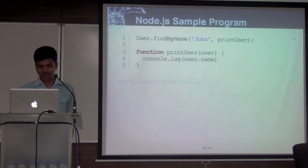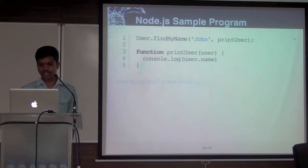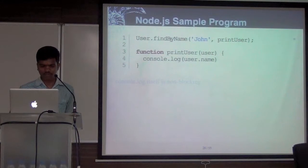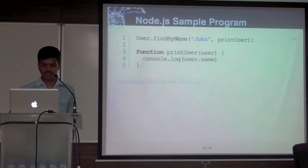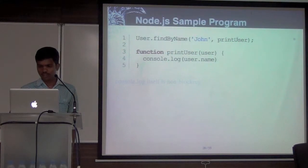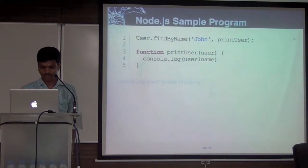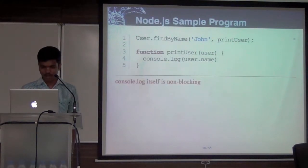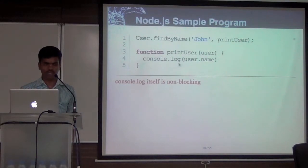But here, instead, you pass a second argument called printUser as a callback. What happens is when user.findByName completes and gets the record, it calls this function. Note that even console.log is non-blocking — meaning in a for loop from 1 to 1000 doing console.log of some big string, the entire for loop will get executed.